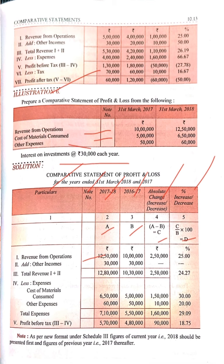Revenue from operations: current year 2018 is 12 lakh 50,000 and previous year 2017 is 10 lakh, so the difference is 2 lakh 50,000. Under other income, interest on investment is 30,000 each year, so there is no change — the absolute change and percentage change are both zero.